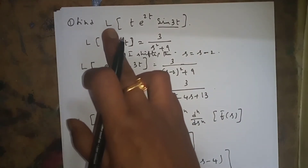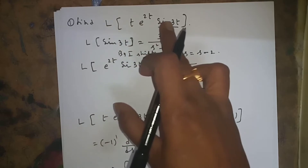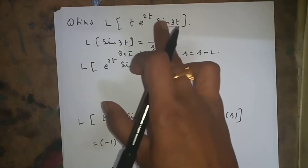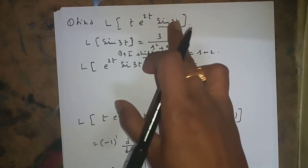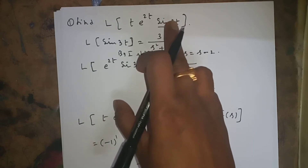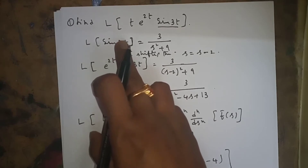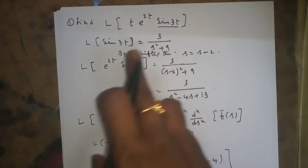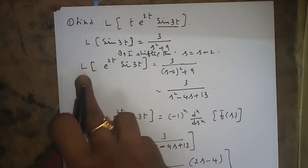The next problem is L{t · e^(2t) · sin(3t)}. There are three functions being multiplied. When three or more terms are present, we first find L{f(t)} for the base function. L{sin(3t)} = 3/(s² + 9), using the formula a/(s² + a²).